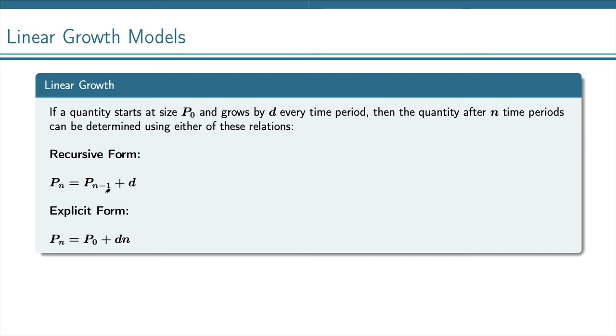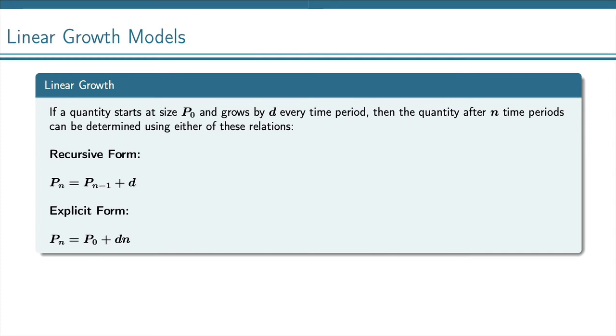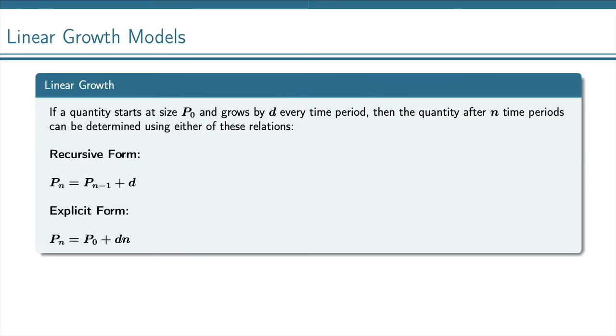For example, if I look at my last example where Marco was collecting antique soda bottles, he was getting 32 new bottles every year. That means that if I use this formula, if I know how much he has one year, then to get the next year, I just simply need to add 32 to that.